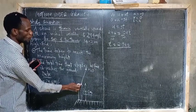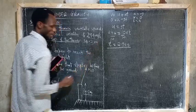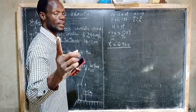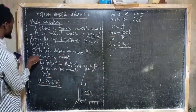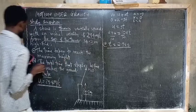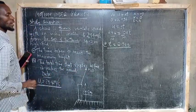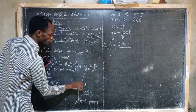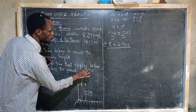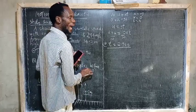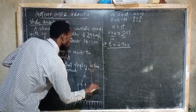This time is only from the point of throwing — that is, from the top of the tower, which is 34.3 meters — to the maximum height. It is not from the ground. That is very important to understand. The second question, part B, is to calculate the total time that elapses before the object reaches the ground. That means the time from the top of the tower to the maximum point, plus the time from the maximum point down to the ground.